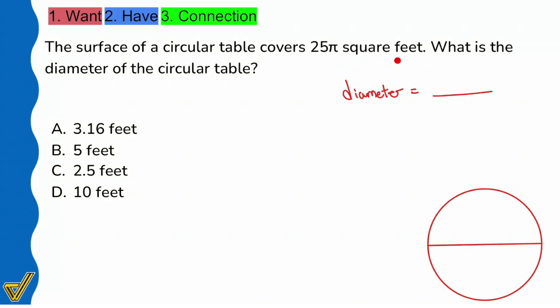And this right here, 25π square feet, what does the phrase square feet identify? Not just regular feet, square feet versus cubic feet. What does square footage mean, my party people? Square feet identifies area. And we see that we're talking about the surface of a circular table covers 25π square feet. So this right here tells me that we are given the area of the circle.